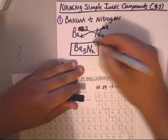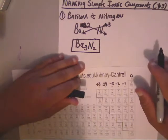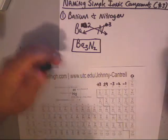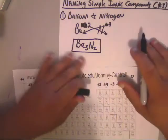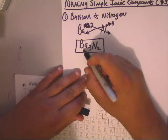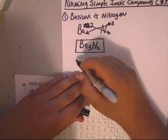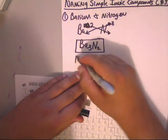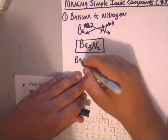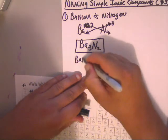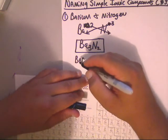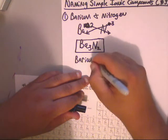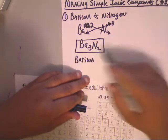That is our ionic formula for barium and nitrogen coming together. Now let's name the compound. You just name the metal first, which is barium — B-A-R-I-U-M.